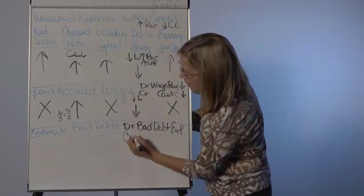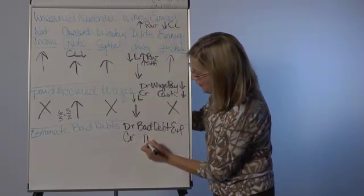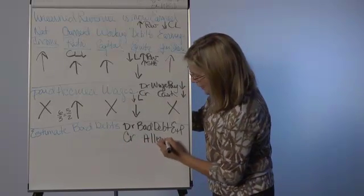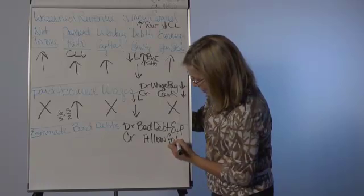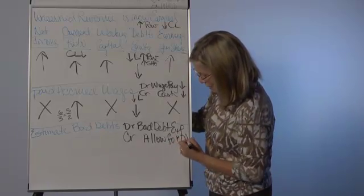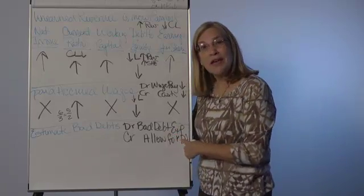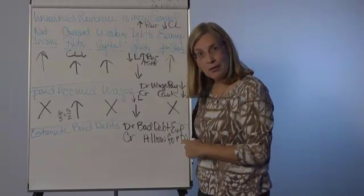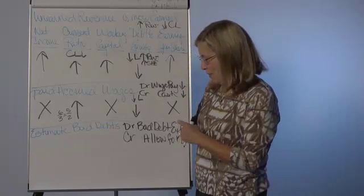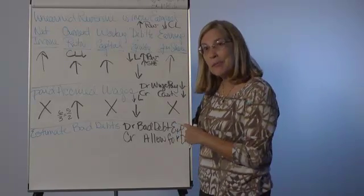And we're going to be crediting allowance for doubtful accounts, uncollectible accounts, or bad debts. Notice how we have lots of names for the same thing. Now, remember the allowance is a contra current asset account, and bad debt expense is an expense account.